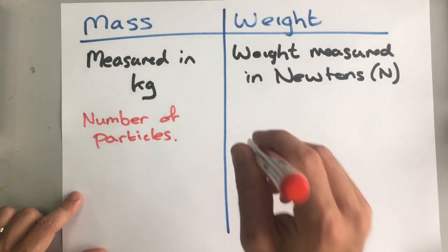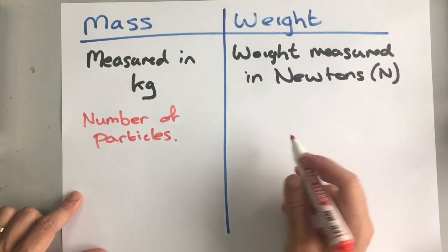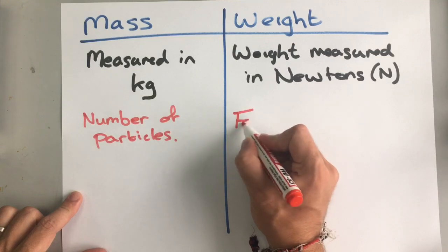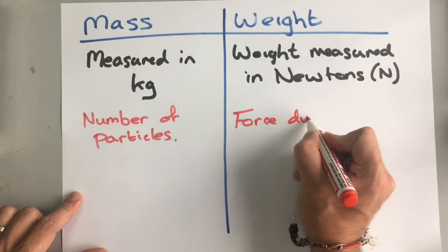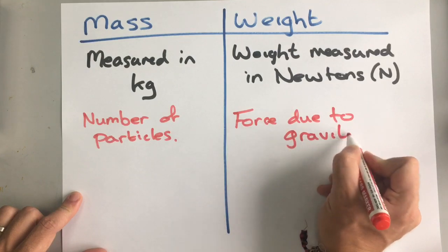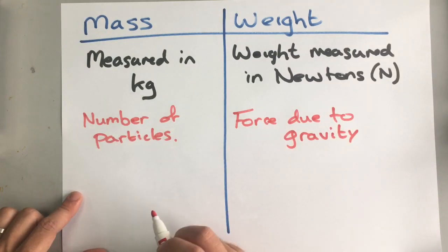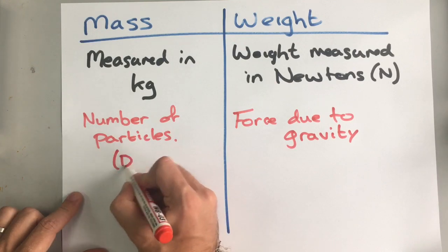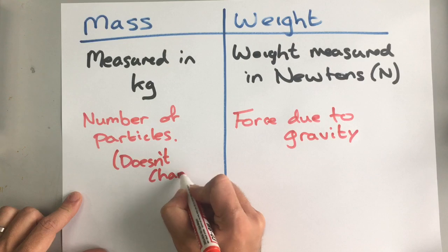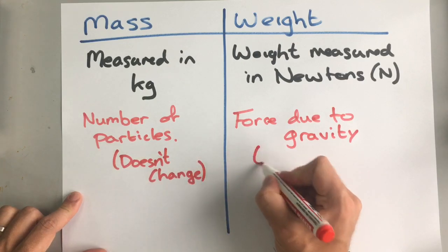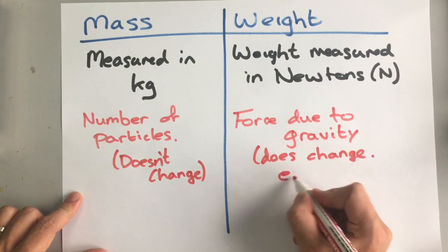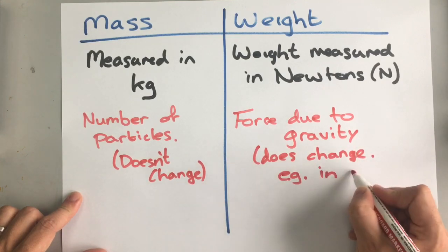Their weight, however, the force pulling them downwards if you're in space or on the moon is much less. And so the weight is the force due to gravity. And that's the most important difference that the mass doesn't change, and the weight does change. For example, in space.